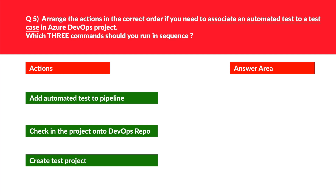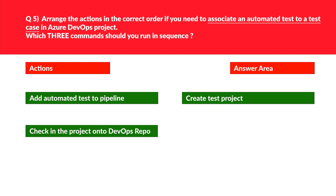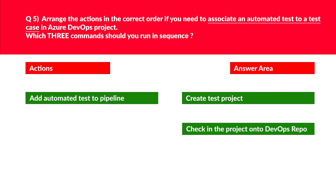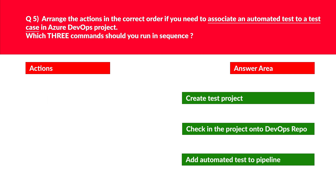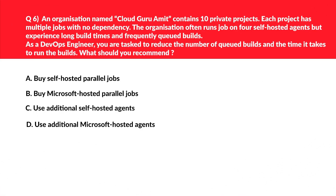Another arrange-the-sequence question. In Azure Test Plans, you can only add manual test cases. For automated test cases, you need to create the test in a programming language of choice, add the project to an Azure repository, and then add the project to run in the pipeline. Quick tip for the exam: when you see sequence questions, the first step should always be to create something. So we create the test project first, then check in the project to the Azure DevOps repository, and finally add the automated test to the build pipeline. We lock this as the correct answer.